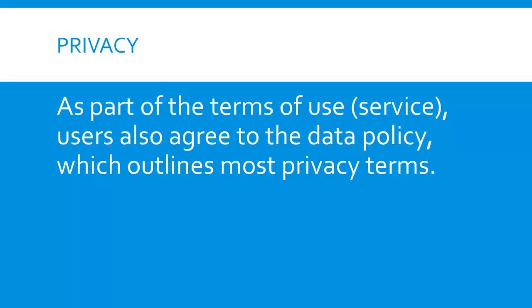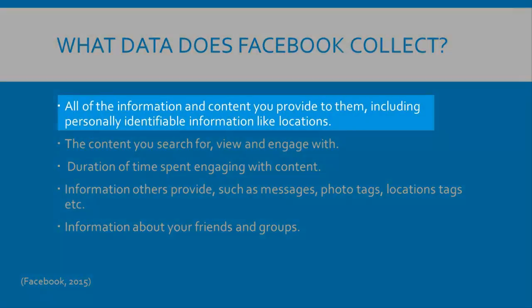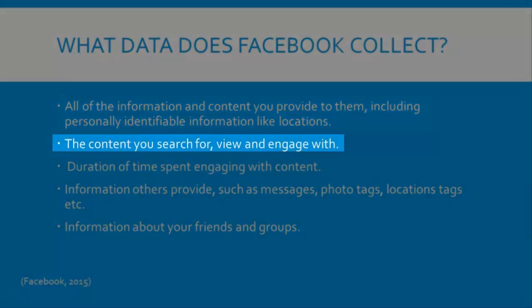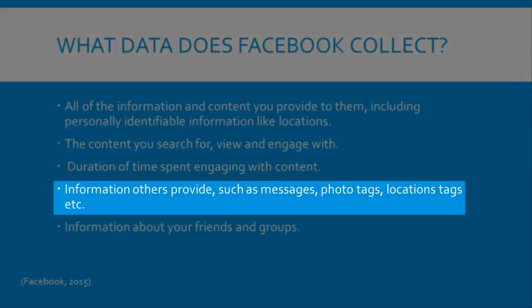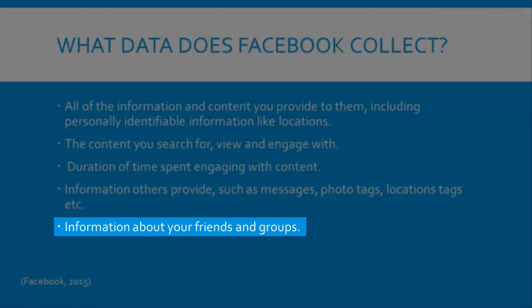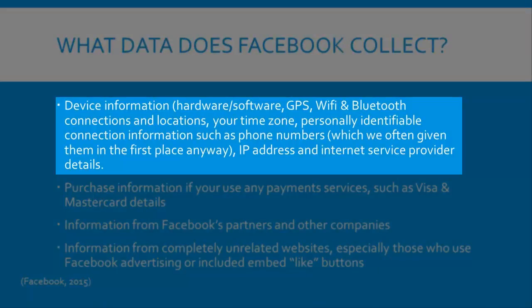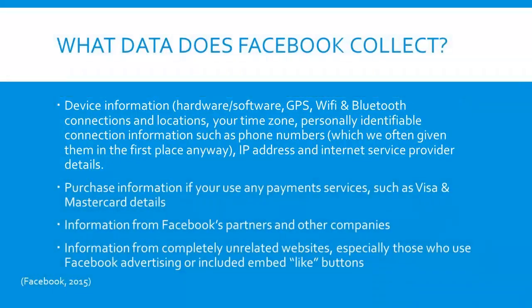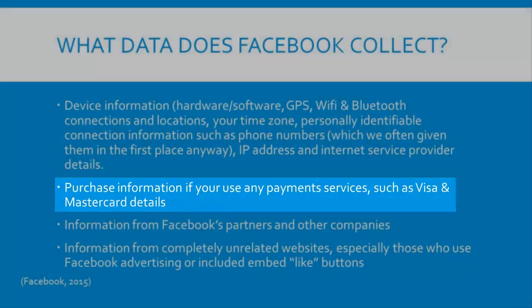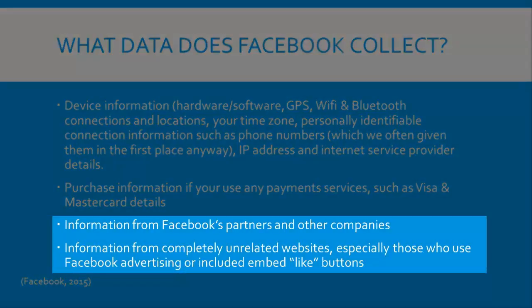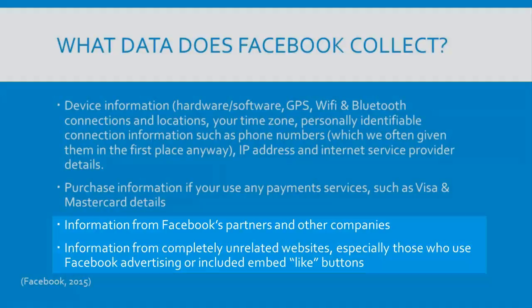Moving on to account privacy and the terms of service, we are directed towards Facebook's data policy. To summarise: Facebook collects all of the content and information you provide, potentially including locations of photos, the type of content you view, how long you engage with it, information from others about you including photo tags or when they send you a message, and information about your friends and groups. Facebook also collects device information from all devices including software and hardware information, GPS, Wi-Fi or Bluetooth connections and locations, your time zone and connection information such as your phone number, IP address and internet service provider. If you make a purchase through Facebook or an app, Facebook collects payment information such as card numbers, and even has the ability to collect information from their partners and other companies — including completely unrelated sites if those sites use Facebook advertising or an embedded like button.